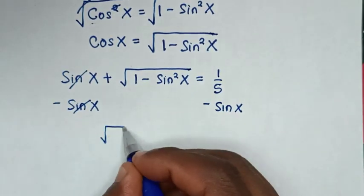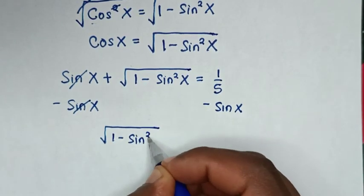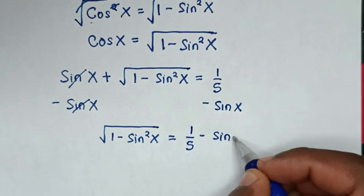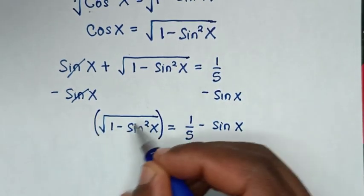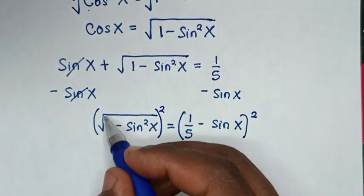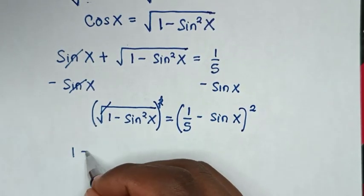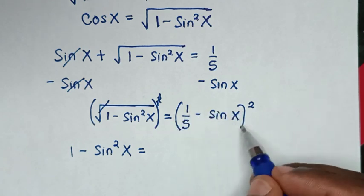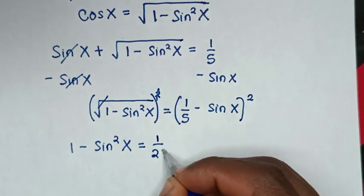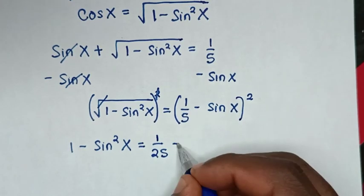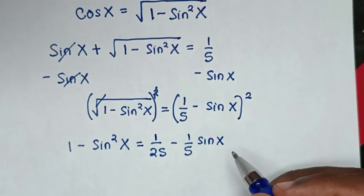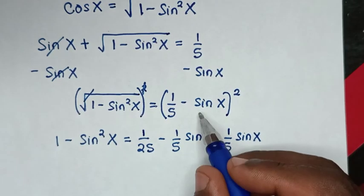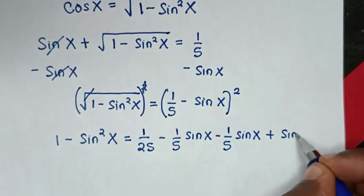We now square both sides to eliminate the square root. The left side gives 1 minus sin squared x. Expanding the right side: 1 over 5 times 1 over 5 is 1 over 25; 1 over 5 times negative sin x is negative 1 over 5 sin x; negative sin x times 1 over 5 is another negative 1 over 5 sin x; and negative sin x times negative sin x is positive sin squared x.